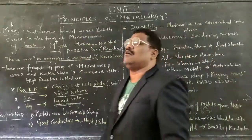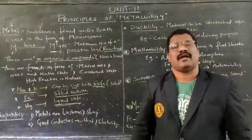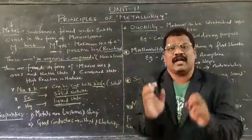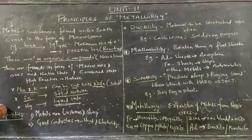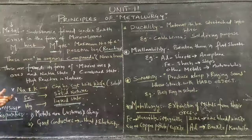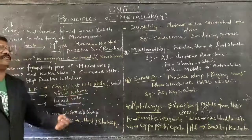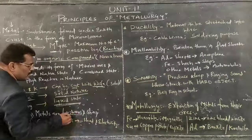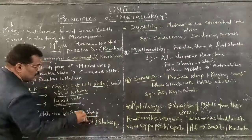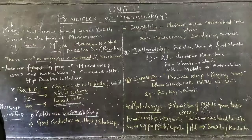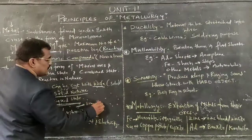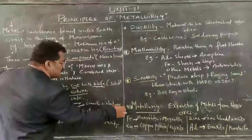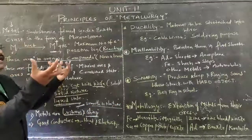These metals have physical properties as well as chemical properties, but here we are discussing physical properties. The first physical property is that these metals are lustrous as well as shiny, meaning they are smooth and shiny in nature.